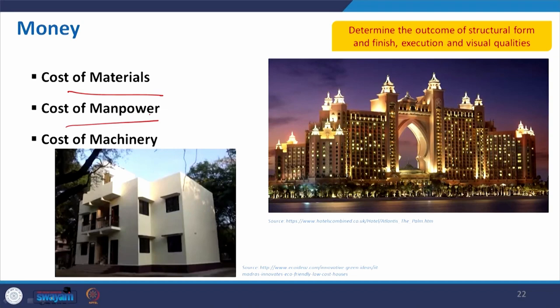Money basically leads to the cost of materials, what the finish should be, how much you pay for manpower, and the machinery. There is research from IIT Madurai using GFRC - glass fiber reinforced concrete - which can be a low-cost architecture, though it has limitations on achievable height. On the other end, a luxurious hotel like the Atlantis on the Palm Islands has amazing finishes. Definitely you have to make a trade-off - how much money you have and how much cost you can afford determines the structure.